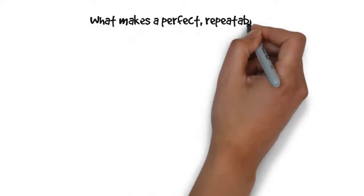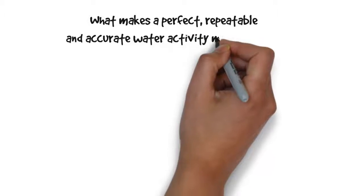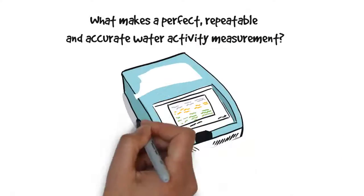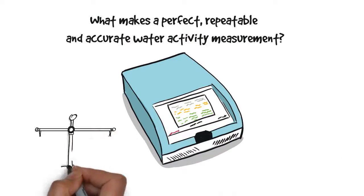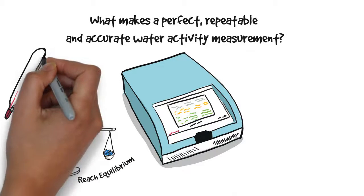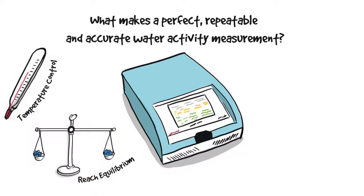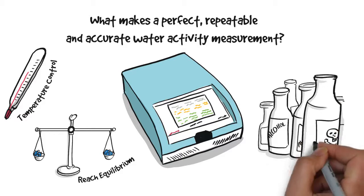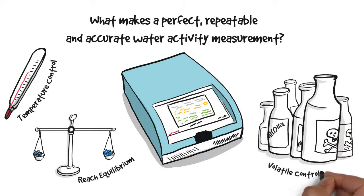What makes a repeatable and accurate water activity measurement? In measuring water activity, wait until the sample has reached stability. Measure at a consistent temperature so that you can compare values. Neutralize the influence of volatiles which can skew your results.